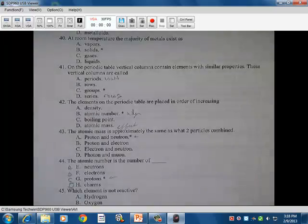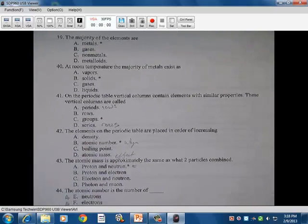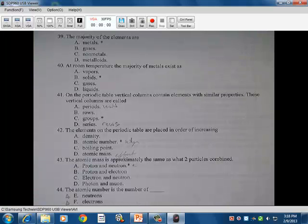39. Majority of elements are metals. See that, you know, the biggest part of the periodic table there are metals, and they are. At room temperature, the majority of metals are solids. The majority of all elements are solids, and the majority of metals are solids as well. The majority of non-metals are solids as well. 41. On the periodic table, a vertical column contains elements with similar properties. These vertical columns are called groups. Periods are rows across the periodic table. Rows are rows. Series are also called rows as well. So periods, rows, and series are all horizontal on the periodic table. Groups are the only thing there that's vertical.